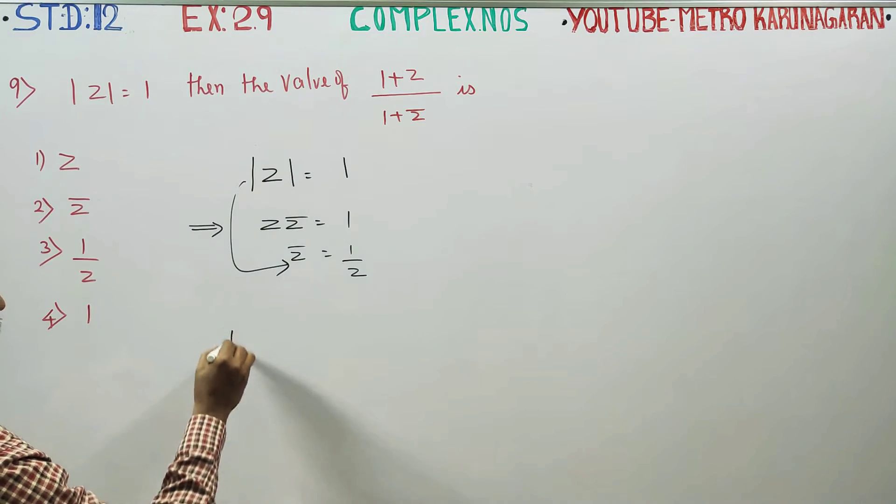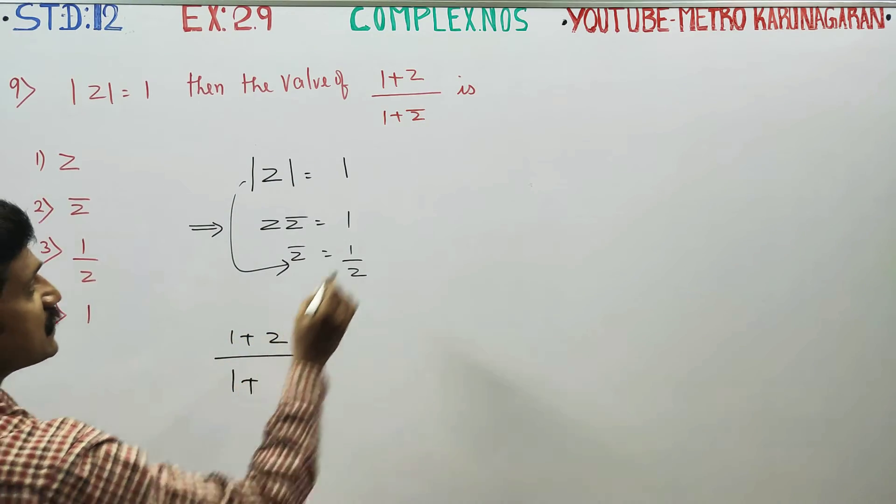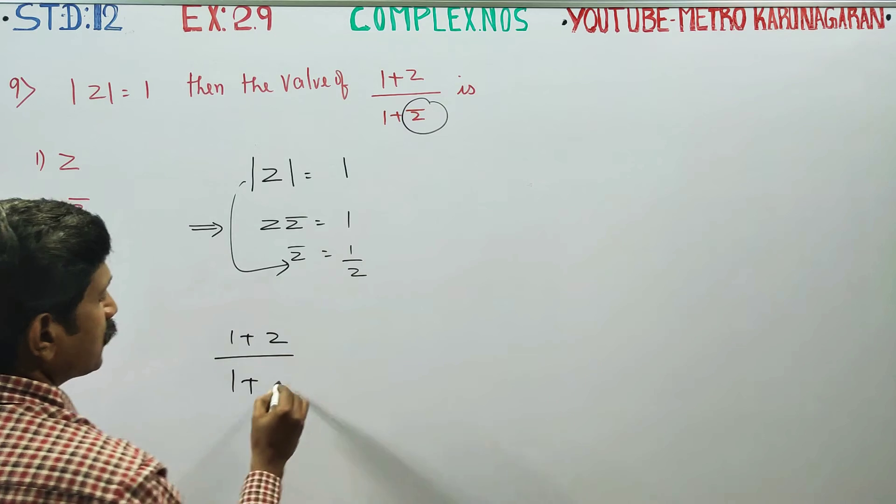Main sum will be 1 plus z by 1 plus z conjugate. It is equal to 1 by z.